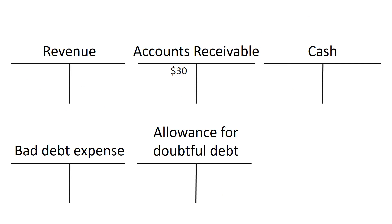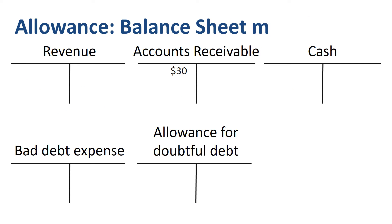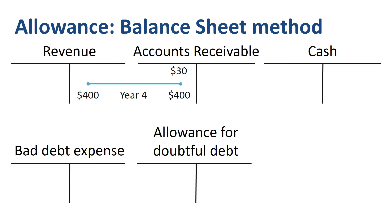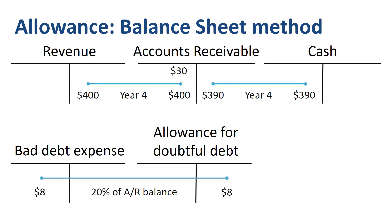The second method to calculate the allowance for doubtful debt is the balance sheet method, as it looks at balance sheet data to record the allowance. $30 opening balance plus $400 sales minus $390 in collections equals $40 gross accounts receivable balance at year end. Management reviews this $40 outstanding balance in detail and estimates that 20% is considered uncollectable. Debit bad debt expense by $8, credit the balance sheet account allowance for doubtful debt by $8.